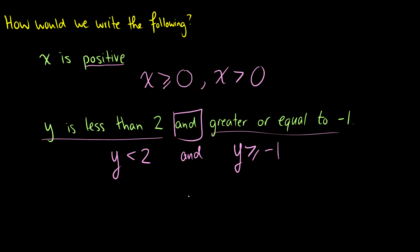So what we can do is we can combine these together. We can say okay y is going to be less than 2. But it's going to be greater than negative 1. So we can say y is between negative 1 inclusive and 2. So that's how we write that.